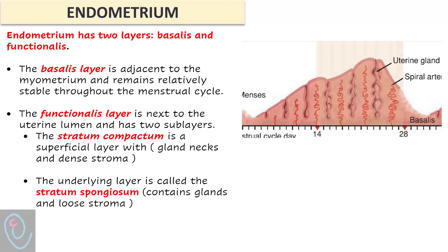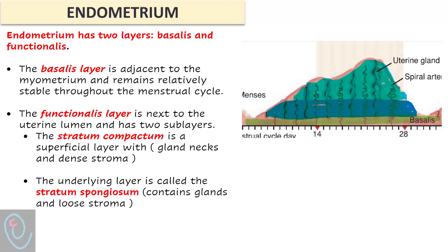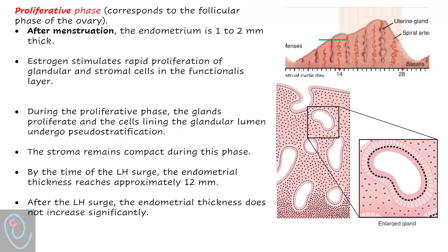Regarding the endometrium: it has two layers — the basalis layer and the functionalis layer. The basalis layer is adjacent to the myometrium and remains relatively stable throughout the menstrual cycle. The functionalis layer sheds during menstruation and consists of two sub-layers: the stratum compactum, a superficial layer containing gland necks and dense stroma, and the deeper stratum spongiosum containing glands and loose stroma. During the proliferative phase — corresponding to the follicular phase of the ovary — after menstruation, the endometrium is 1–2 mm thick.